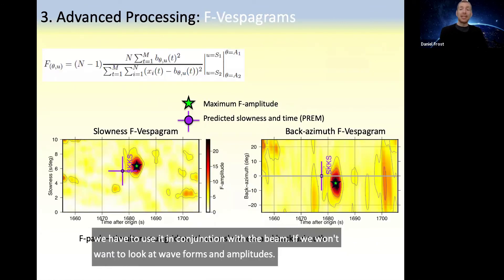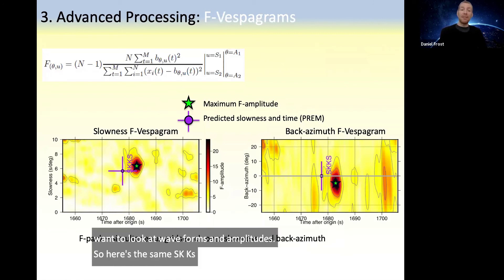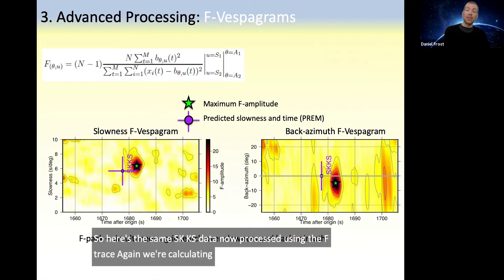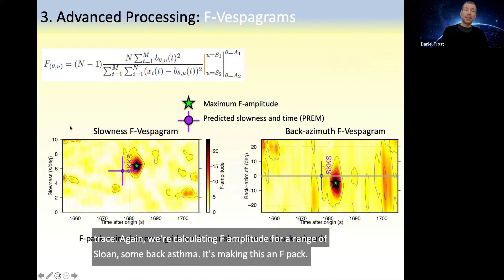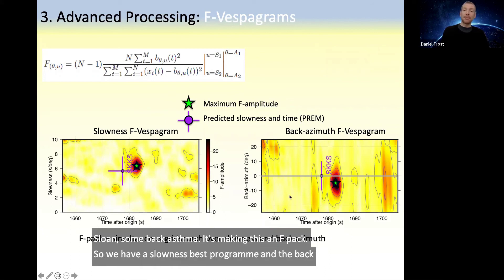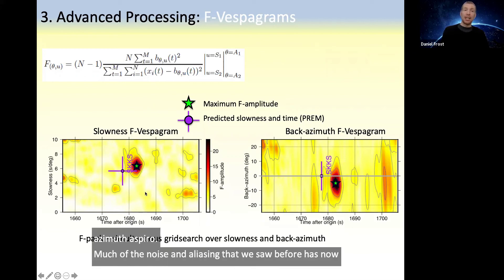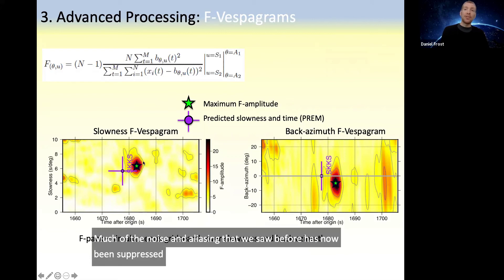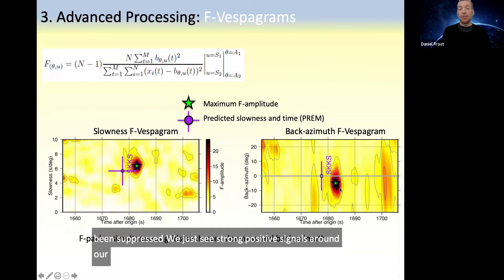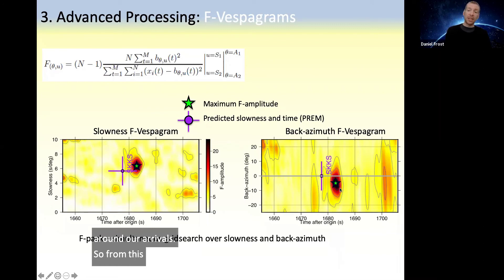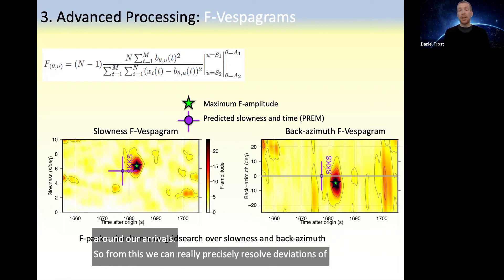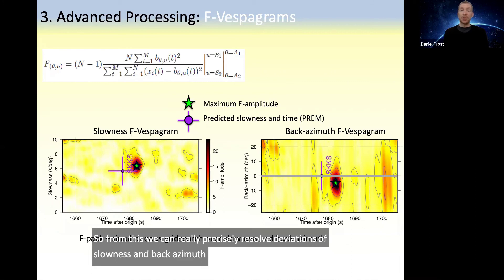Here is the same SKKS data processed using the F trace — calculating F amplitude for a range of slownesses and back azimuths, making this an F pack. We have the slowness Vespagram and the back azimuth Vespagram. Much of the noise and aliasing seen before has now been suppressed, and we just see strong positive signals around our arrivals. From this, we can very precisely resolve deviations of slowness and back azimuth from the predictions and relate this to Earth properties.